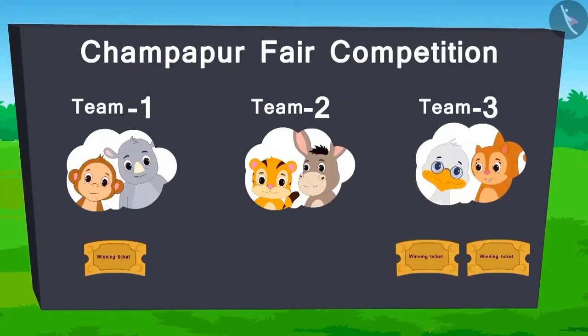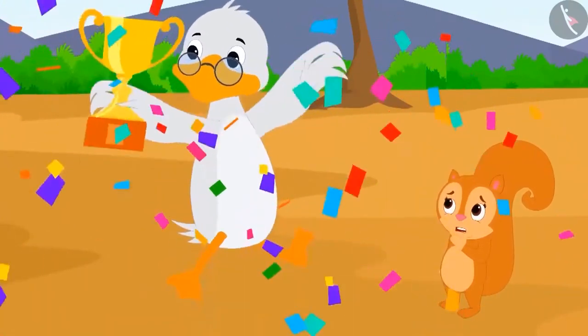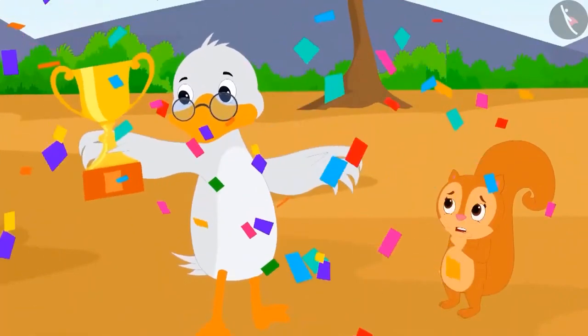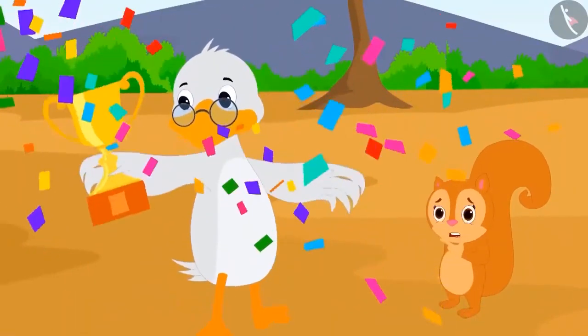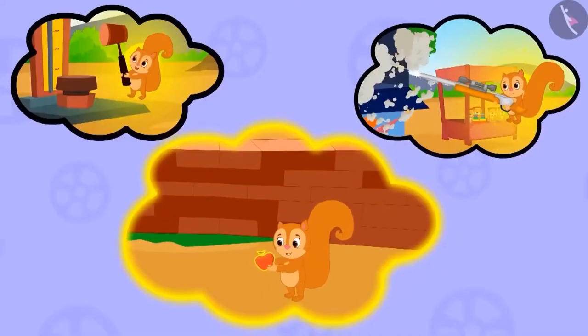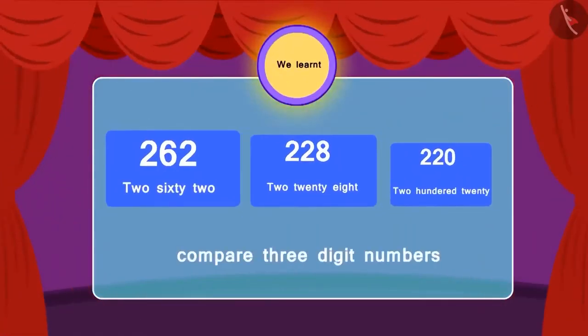In the end, Team 3 wins the fair competition with two tickets. Badbole Badak uncle started dancing with joy, but Chanda was surprised — she doesn't remember anything and is still wondering how she managed to do it all. Maybe she forgot everything because of the magical fruit? In this lesson we learnt to compare three-digit numbers.